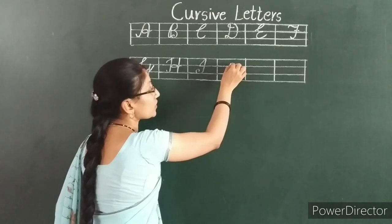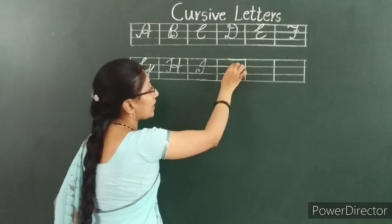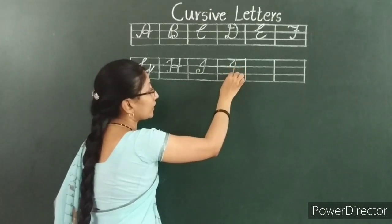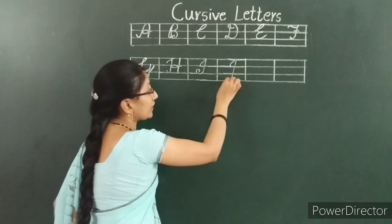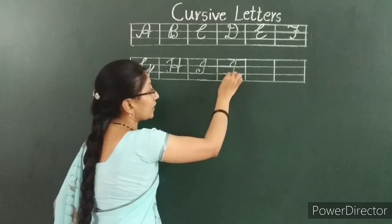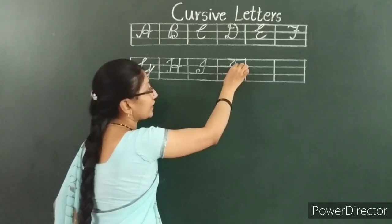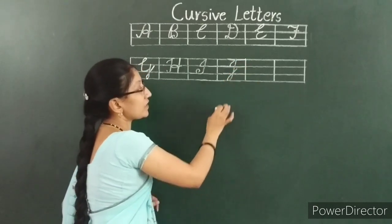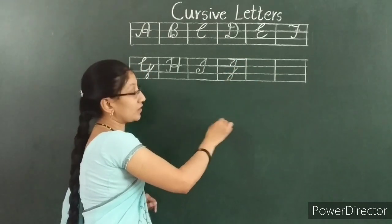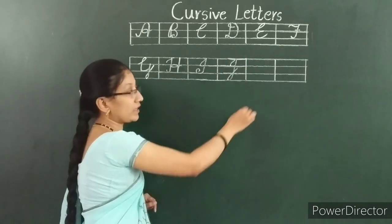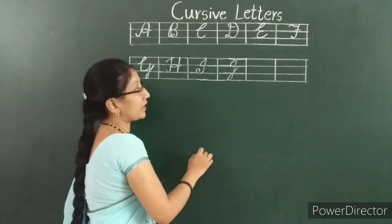Next, the letter is J. It starts from here. Move upward. Again, you come down. It touches the fourth line, then take a loop. It moves to the second line, then leave it. This is J. You go up, come down, touches the fourth line, then move to the third and second line.